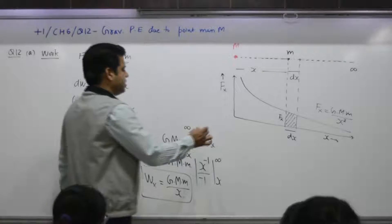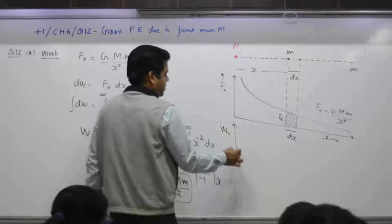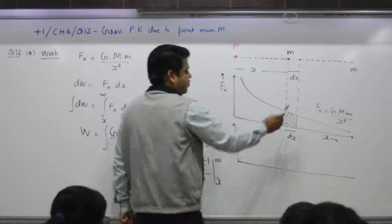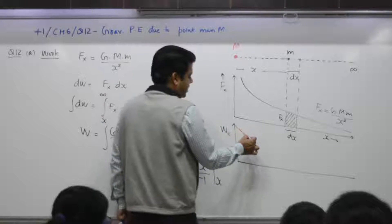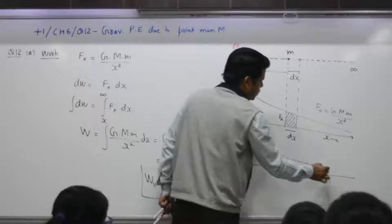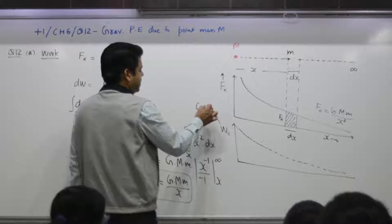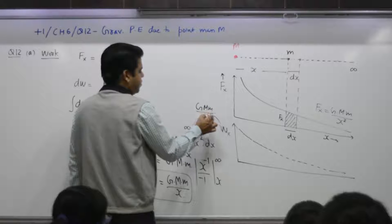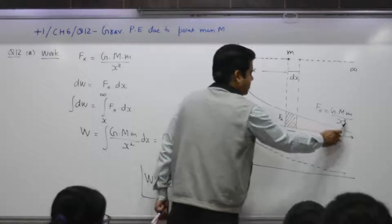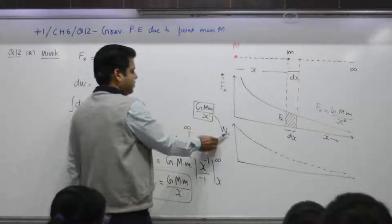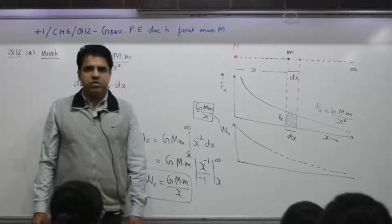We can plot a graph for work done. Force was inversely proportional to x squared, while work done is inversely proportional to x — that is, work done equals GMm over x.